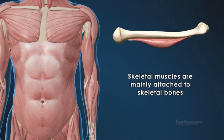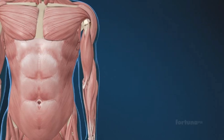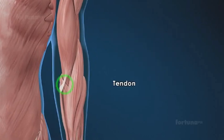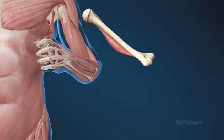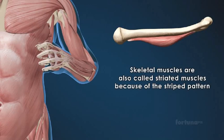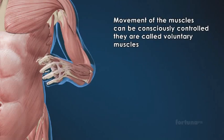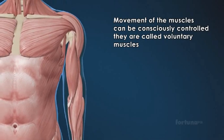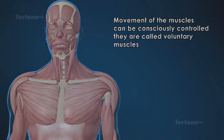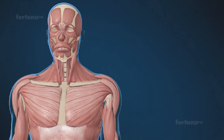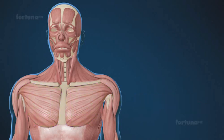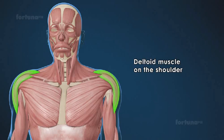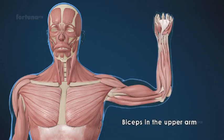Skeletal muscles are mainly attached to skeletal bones and held to them with the help of tendons; they cause movements of the body. Skeletal muscles are also called striated muscles because of their striped pattern. Because movement of these muscles can be consciously controlled, they are called voluntary muscles. Some of the most important skeletal muscles are the pectoralis on each side of the upper chest, the deltoid muscle on the shoulder, and the biceps in the upper arm.